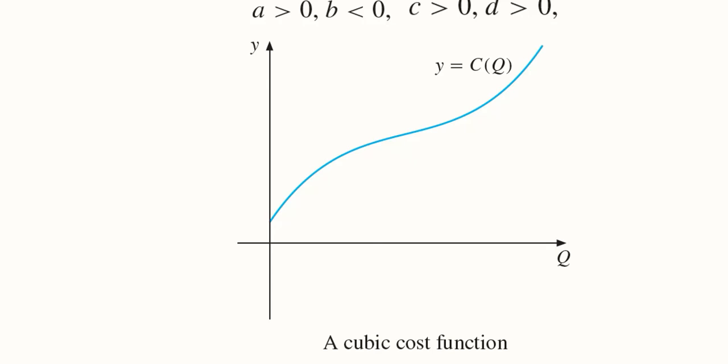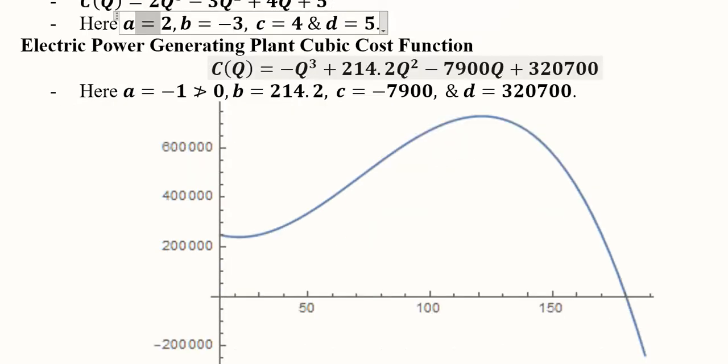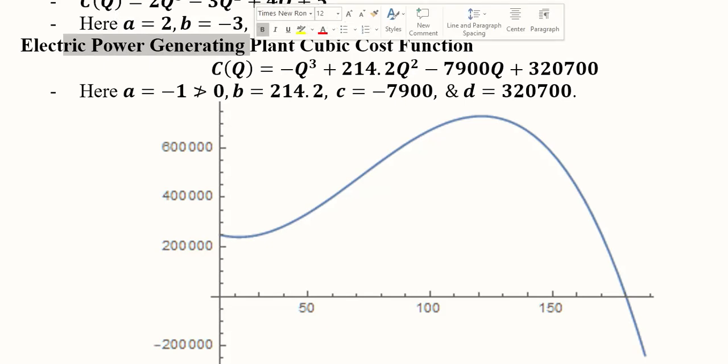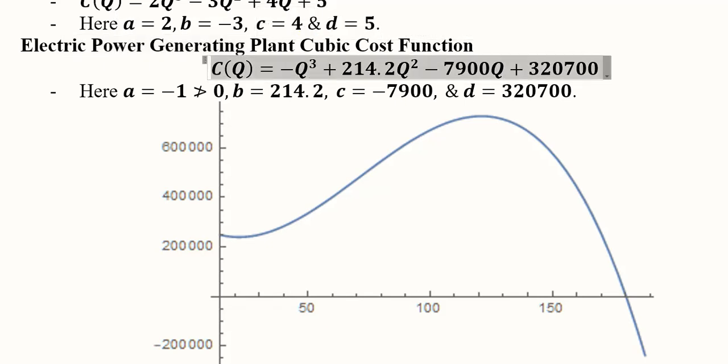Another example is of the electric power generating plant cubic cost function. For this electric power generating plant, we have this cubic function, and here the value of a is minus 1, which is not positive.